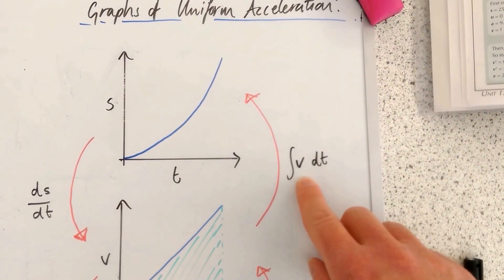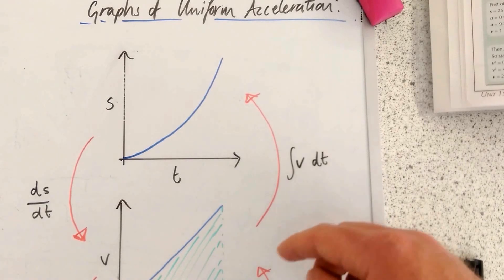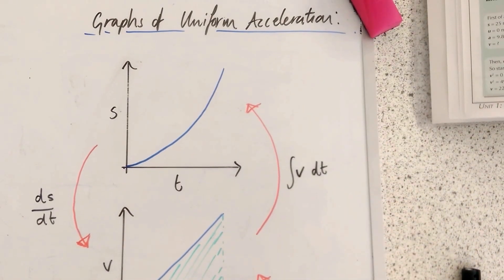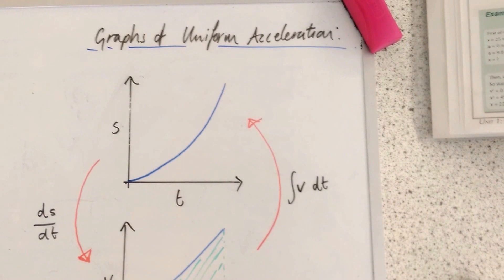So from the velocity time graph the area is going to give you the displacement. So the integral of the function velocity with respect to time is going to give you the displacement, the total displacement of that object which is being uniformly accelerated.